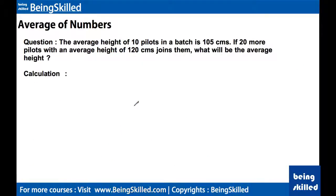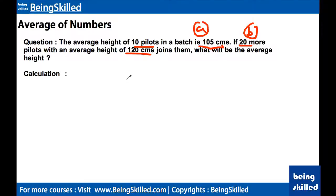Now we will solve another question: the average height of 10 pilots in a batch is 105 cm. If 20 more pilots with an average height of 120 cm join them, what will be the average height? We need to multiply the number of pilots by their average height in each group, then divide by the total number of pilots.